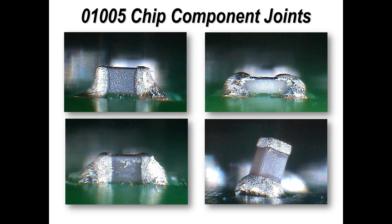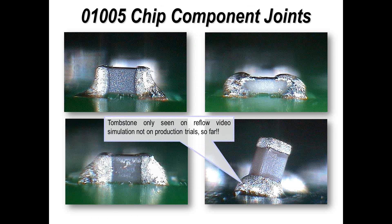We haven't really seen too many issues of lifting components. When I was doing initial trials on 01005, the only example of a tombstone — a Manhattan skyline, a draw-bridging effect — was one I produced making a training video to show it happening, so I didn't actually have it in production. You can clearly see on these examples we generally have an excessive amount of solder paste. As you go smaller and smaller, you can certainly reduce your stencil thickness rather than reducing your stencil opening apertures on your stencil sheet.